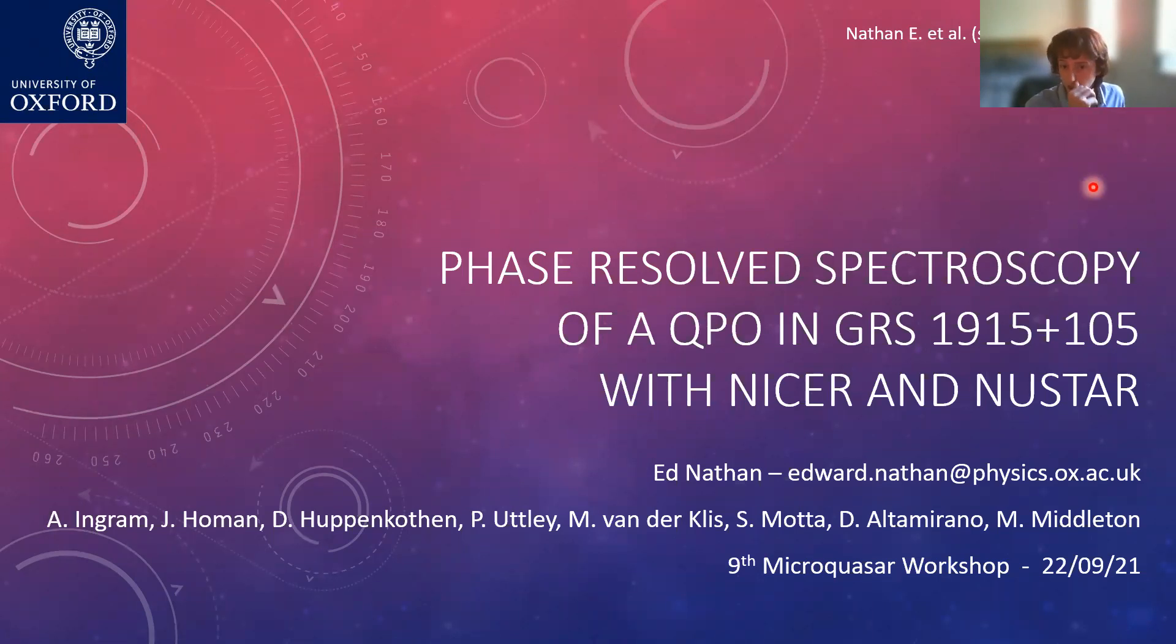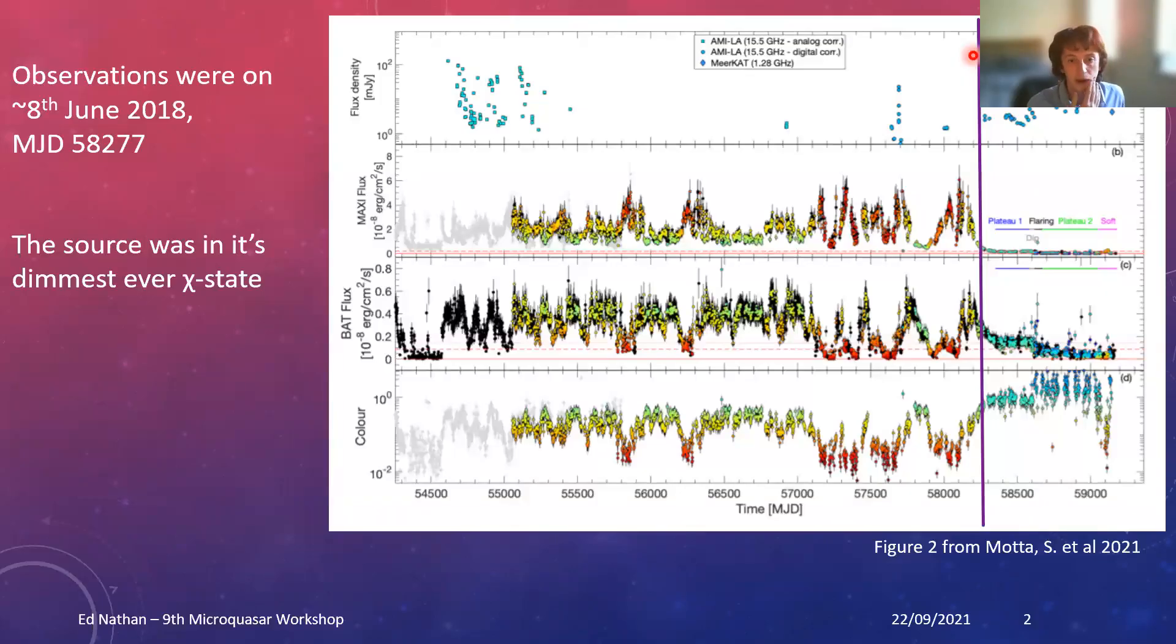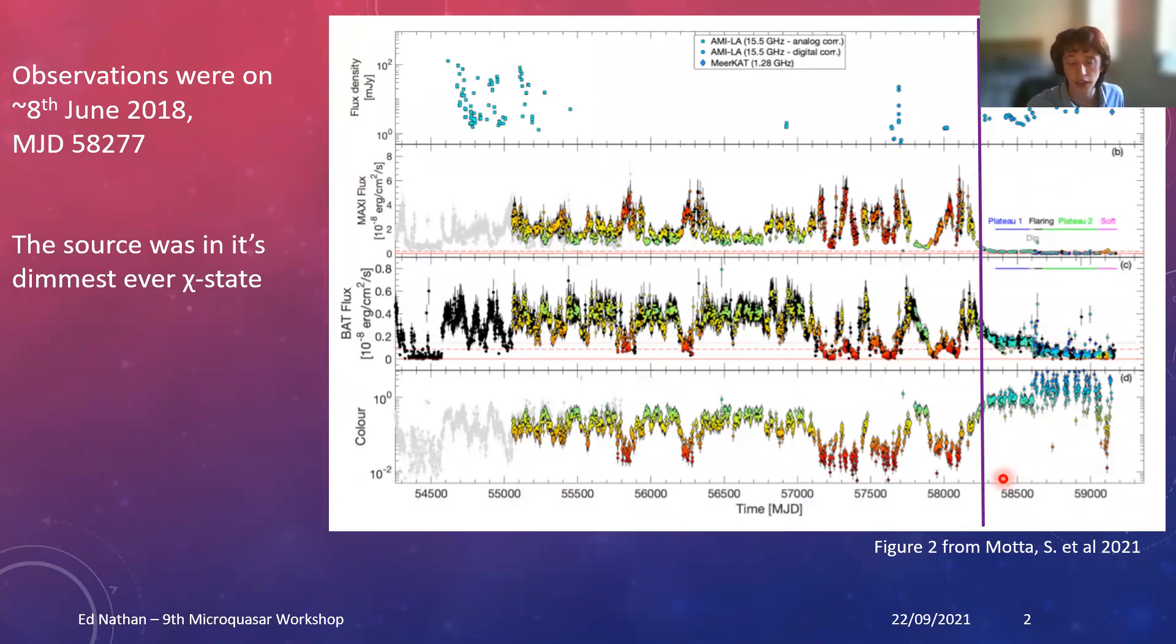I'm going to talk to you about my work phasing a QPO in GRS 1915 with simultaneous NICER and NuSTAR data. This work has been submitted and is still awaiting review. Earlier this week we heard a lot about GRS 1915. For context, I've applied this to a figure from the NuSTAR paper from earlier this year. Observations were from early June 2018, just before the source went into its current X-ray obscured state. I'm looking at a type C low frequency QPO in this data which is about 2.2 hertz.